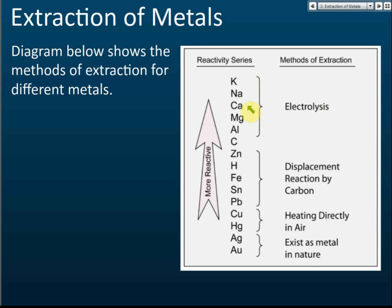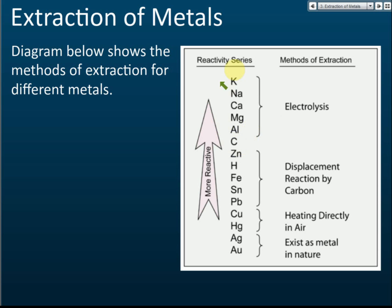Potassium, sodium, calcium, magnesium, and aluminum are extracted by using electrolysis. This is one of the applications of electrolysis — it is used to extract metals, but not all metals. Only those metals which are higher than carbon in the reactivity series are extracted by using electrolysis.